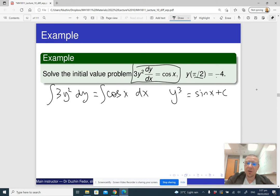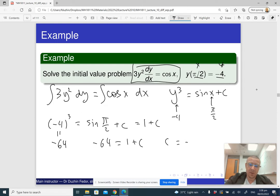Now, I can use this initial condition to find this C. So pi over 2, so here pi over 2 is X, and minus 4 is Y. So it means that I'm going to substitute pi over 2 for X, and I'm going to substitute negative 4 for Y. And doing that, I'm going to get negative 4 cubed equals sine of pi over 2 plus C. Sine of pi over 2 is just really 1. So it is 1 plus C. And negative 4 cubed is really negative 64. So I just got the equation for C, negative 64 equals 1 plus C, and solving for C, I get C equals negative 65.